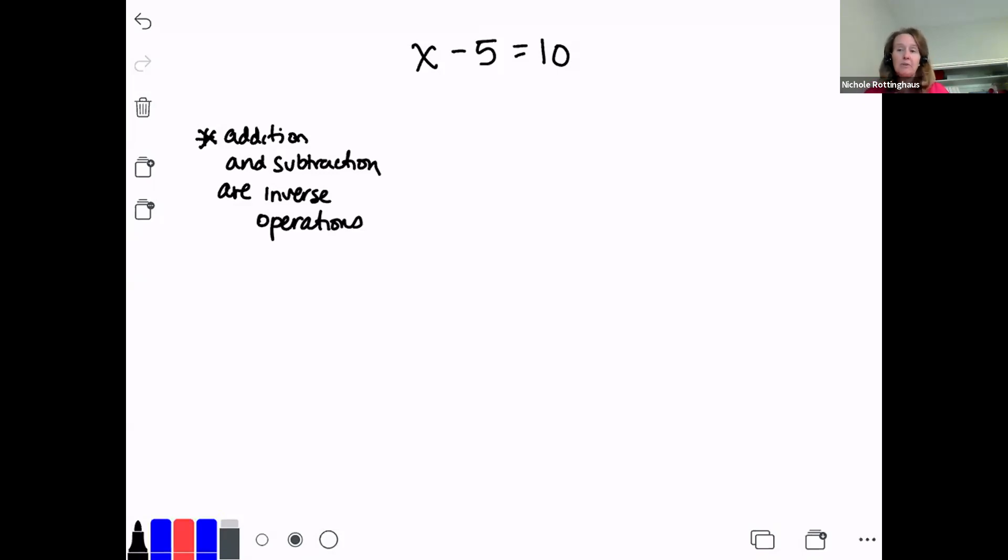That's what we were doing with those addition equations. We're just doing the same thing the other way around now. With a subtraction equation where something is being subtracted from x, I undo that subtraction by adding. So if I'm taking five away from x, to get back to x, I have to add five. They're inverse operations, and so we solve using inverse operations.